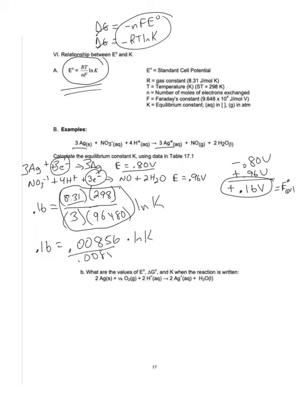To get rid of the natural log, the opposite function of ln is little e (not big E). So I take e to the power of 18.7, and the equilibrium constant ends up with a value of 1.32 times 10 to the 8th.